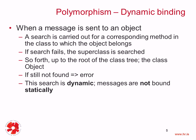The language supports dynamic binding, which is basically a dynamic selection of method at runtime. When a message is sent to an object, a search is carried out for a corresponding method in the class to which the object belongs. The first check is: does a corresponding method exist in the class for the current object? If the search fails, then a search is performed in the superclass — the parent class.